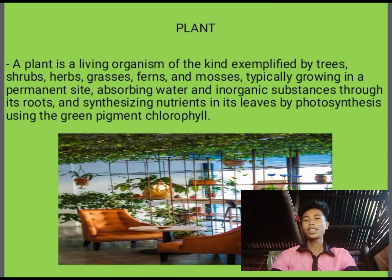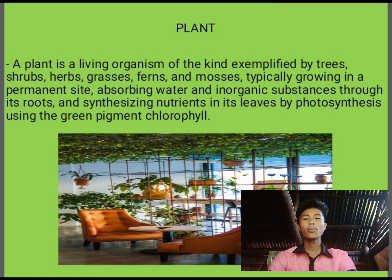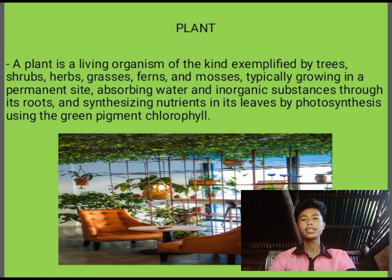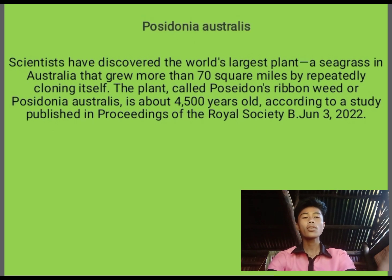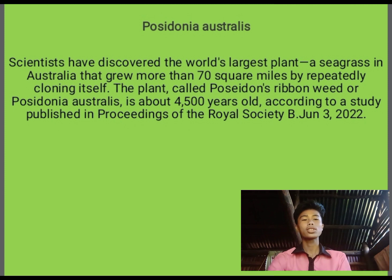Let us now move on to plants. Plants can be seen everywhere — as we walk through the garden of a school or park. Plants, like animals, are living organisms and have habitats too. There are many different kinds of plants. One example is the longest plant found in Australia, which is famous for its capability to spread or move across land.